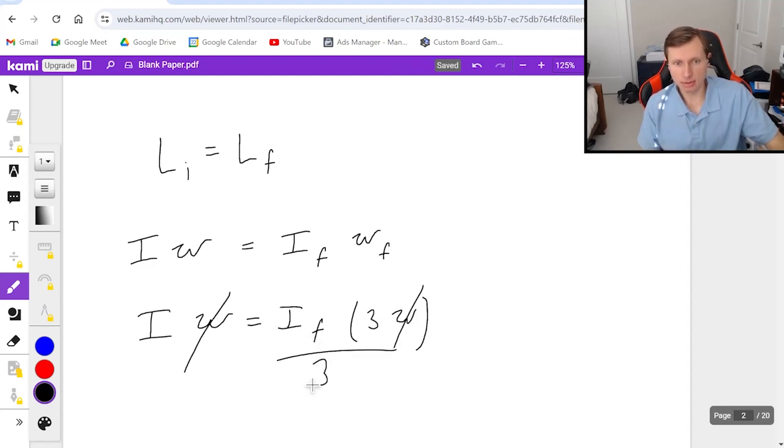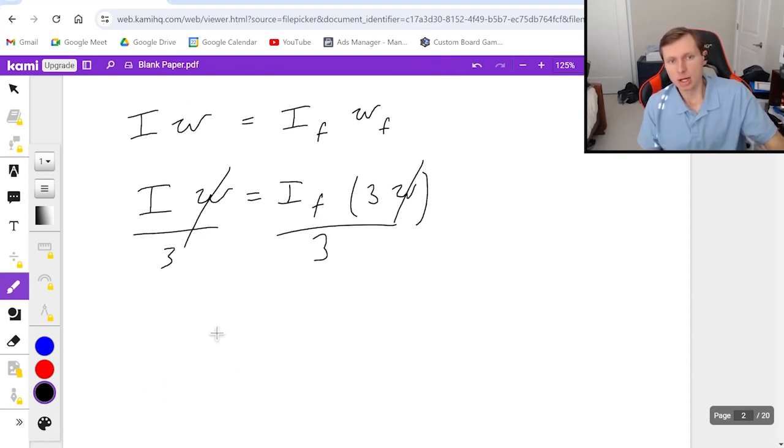And if we want to solve for I_final I gotta isolate that variable. Cancel out omega and divide both sides by three. So what I'm saying is her final moment of inertia is one-third her initial. So even though her angular velocity increased by a factor of three there's a trade-off, her moment of inertia decreased by a factor of three.